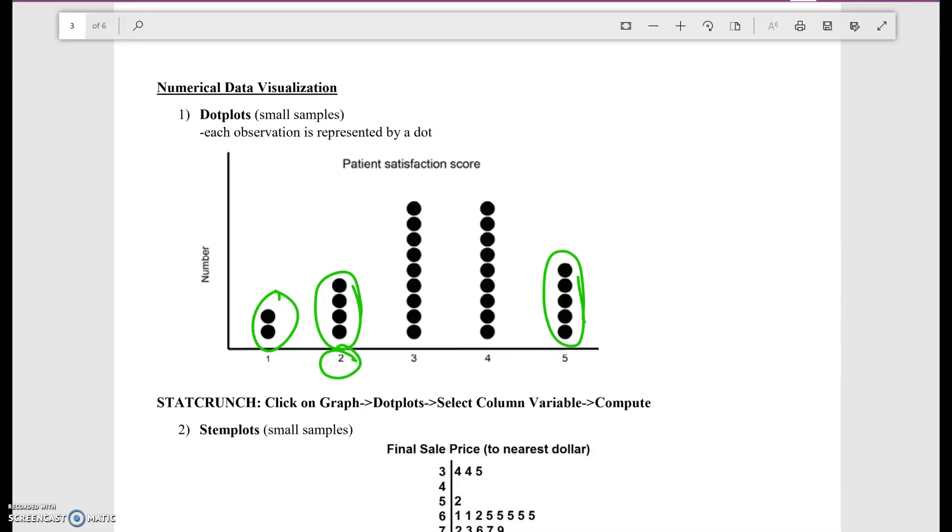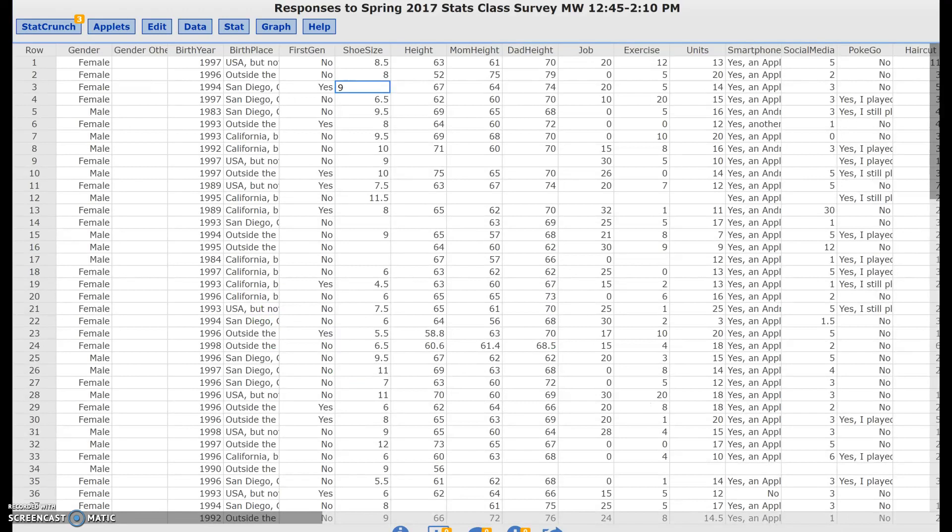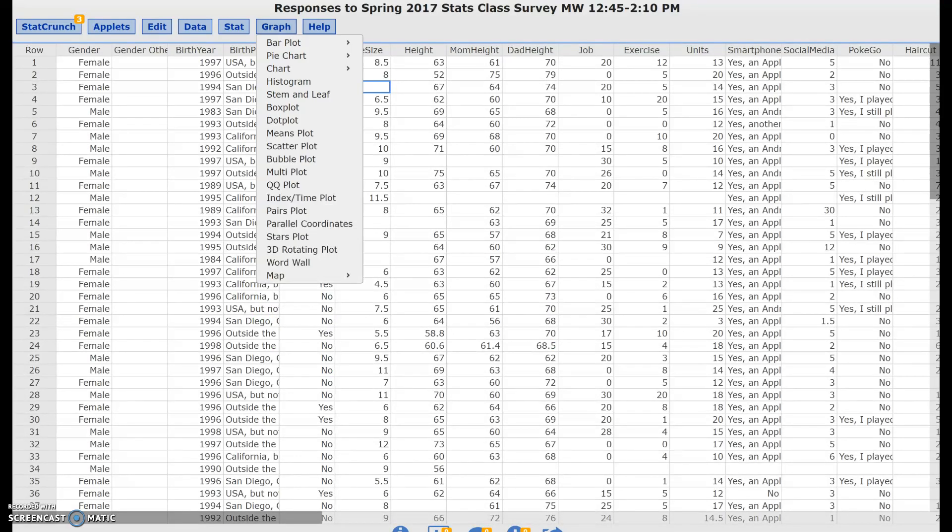Usually this is done with small samples or numbers that don't have a lot of unique values. So one way that you can do it, you can look at age if you really wanted to. Let's take a look at it. If I go back to our data, let's access a dot plot. Let's go ahead and click on graph.